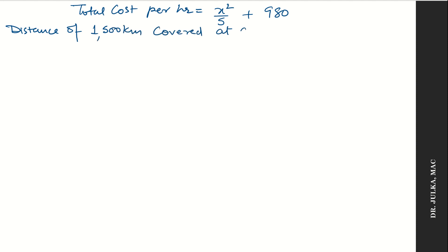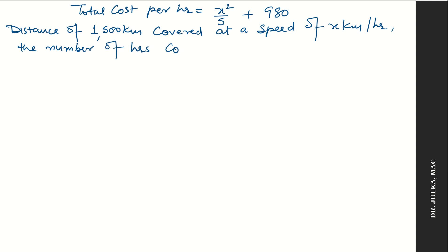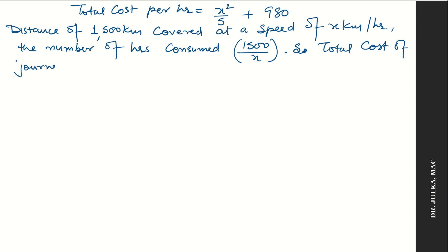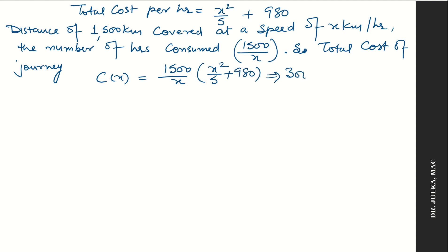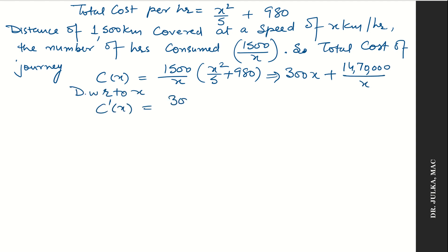For a distance of 1500 km covered at a speed of X km per hour, the time taken is calculated using the formula: time = distance / speed = 1500 / X hours. The total cost of the journey equals the number of hours multiplied by cost per hour, which equals (1500/X) × (X²/5 + 980), simplifying to 300X + 14,70,000/X.